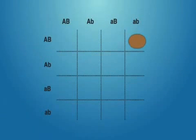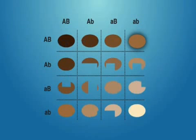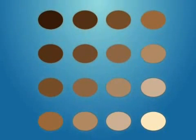Not only that, but if each parent is capital A, little a, capital B, little b, the combinations that could be produced in their children could result in a very wide range of skin shades in just one generation.